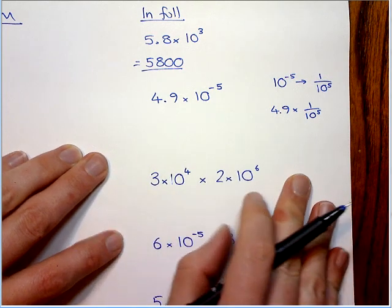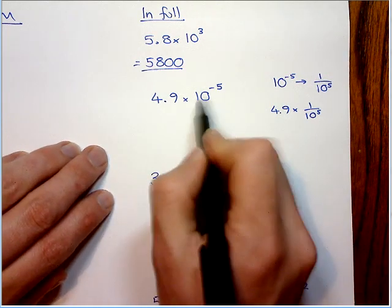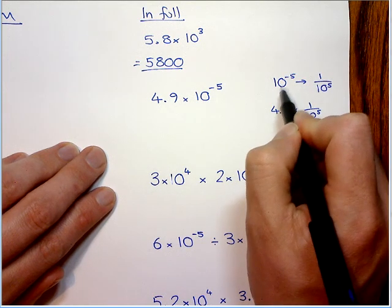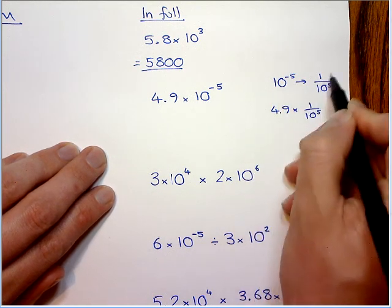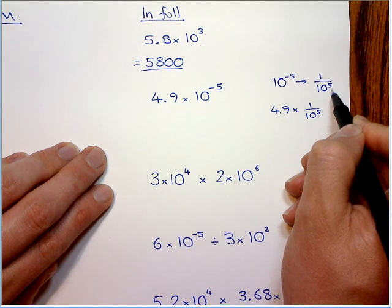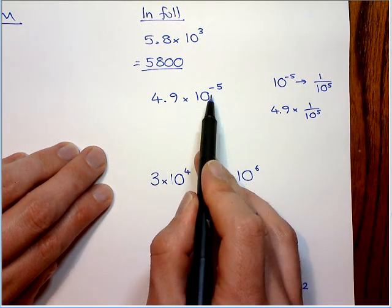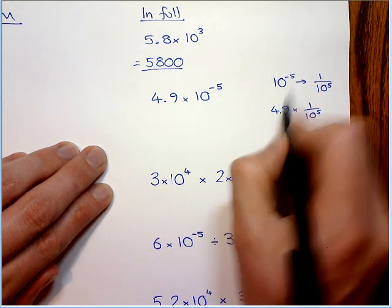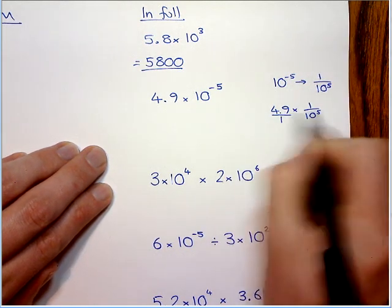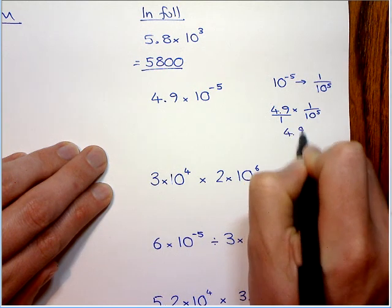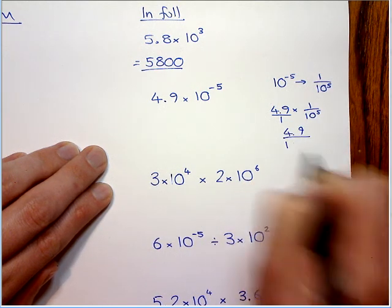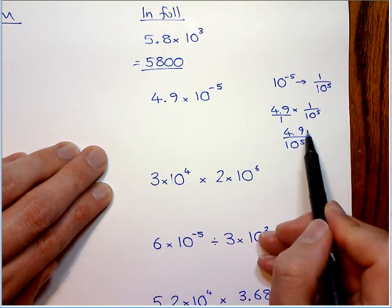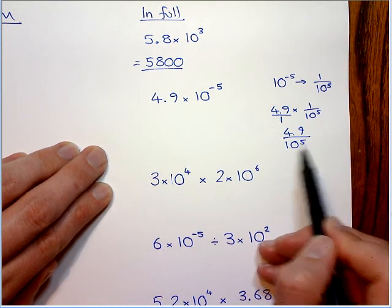Now here I'm going to attempt to explain why this means divide by 10. So from the indices video, I showed you that 10 to the minus 5 is the same as 1 over 10 to the 5. So 4.9 times this can be written as 4.9 times this. And this is a fraction now, so if I make this a fraction, times the tops, times the bottoms. So 1 lot of 4.9 divided by 10 to the 5. So it's the same as doing 4.9 divided by 10, 5 times.